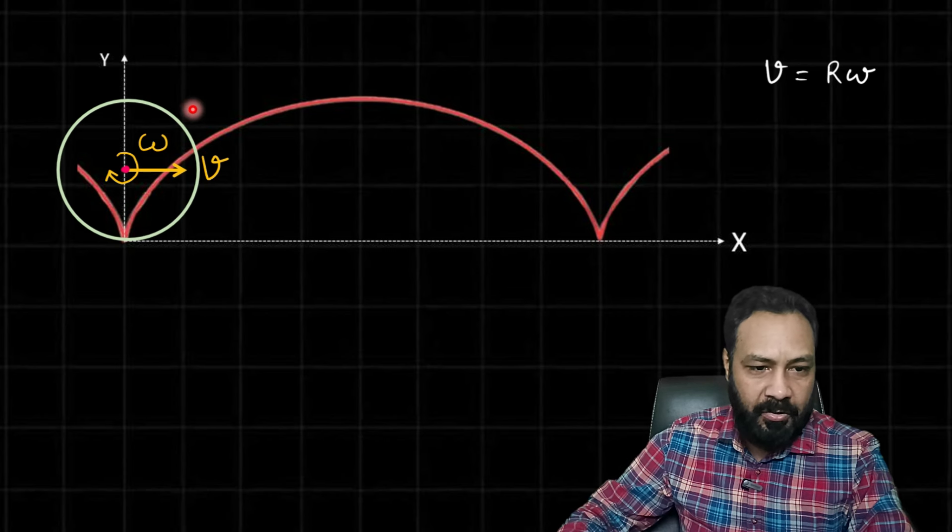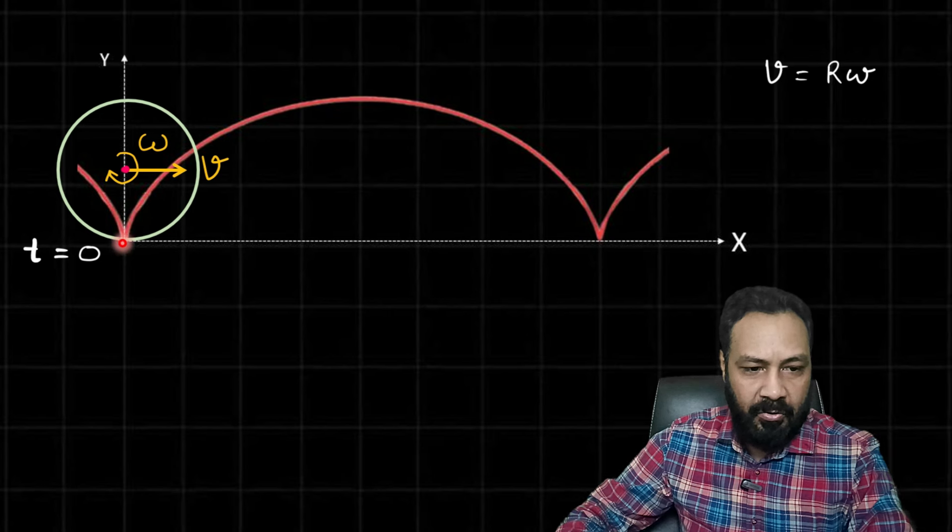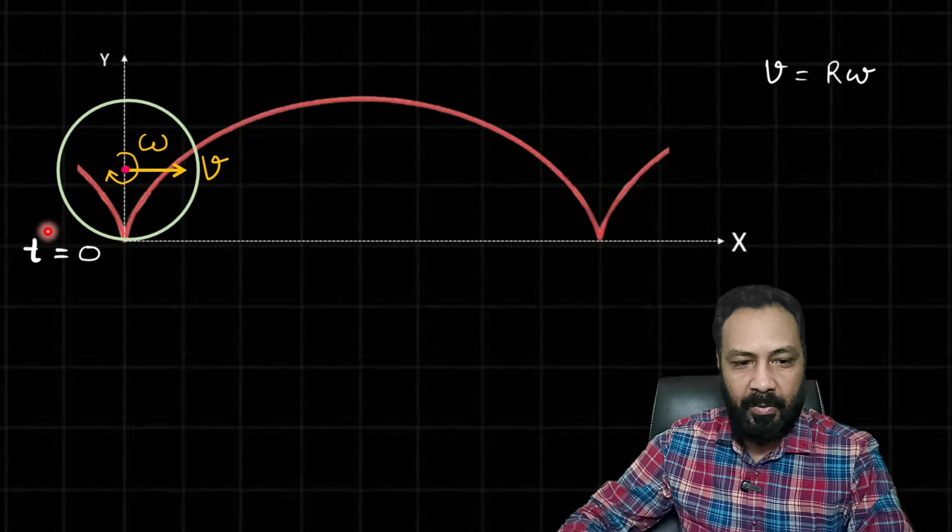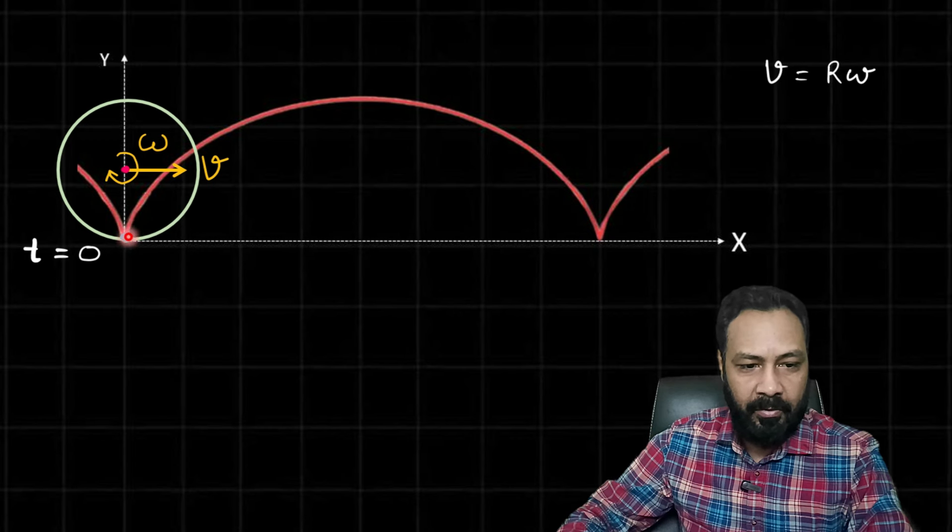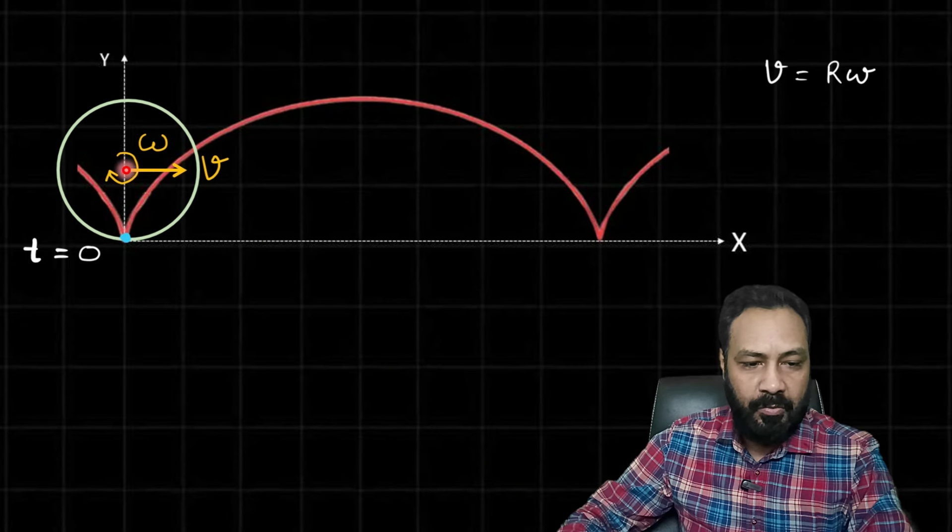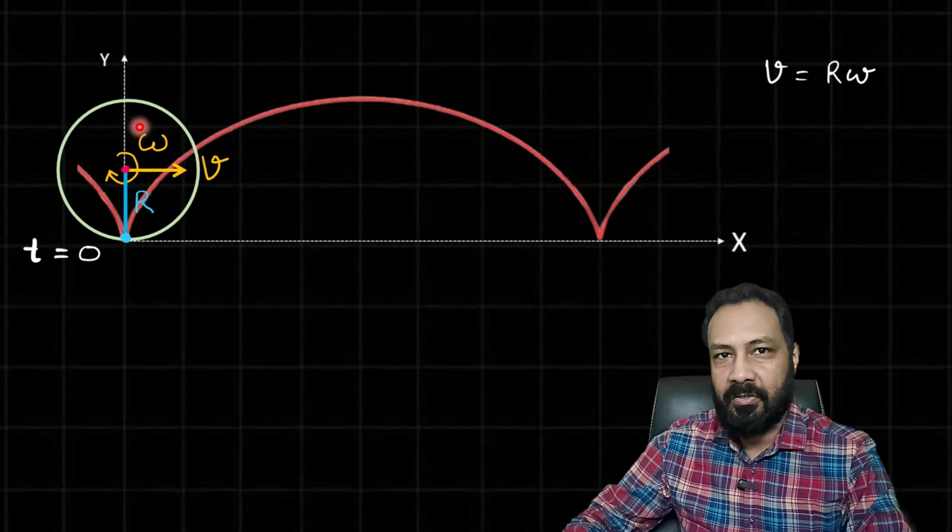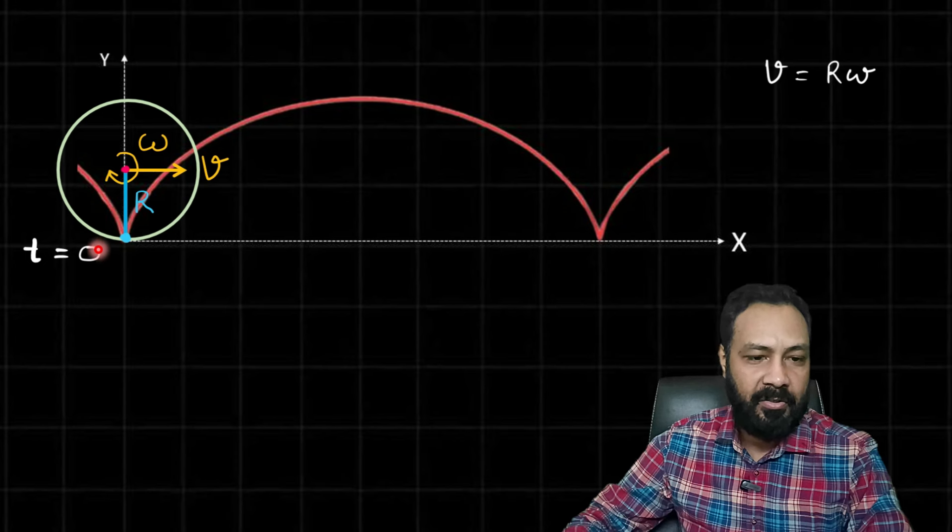Suppose at t = 0, the point of contact with the ground, I am taking that as the origin. This is my x-axis, this is my y-axis, and let's mark this point of the wheel. Actually this is the trajectory of this point. Also join this point with the center by this line. As the wheel is rolling, this line rotates with the same angular velocity as that of the wheel.